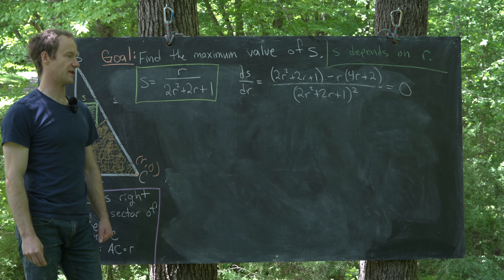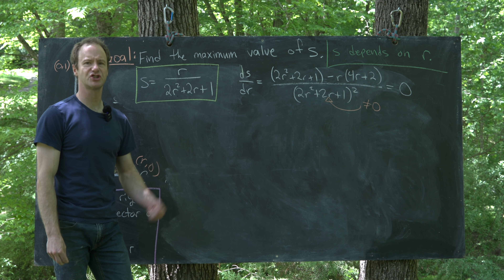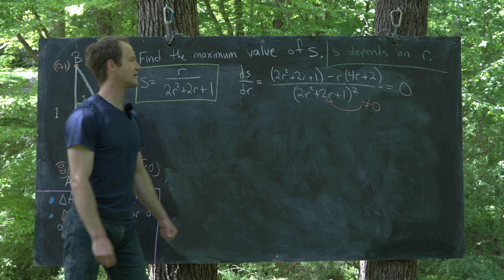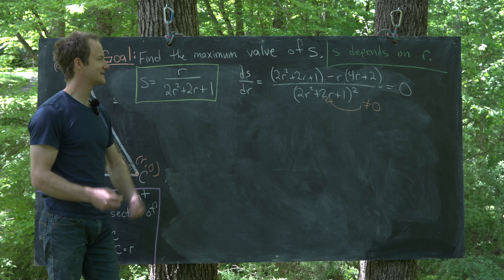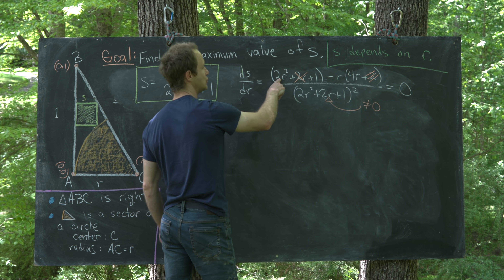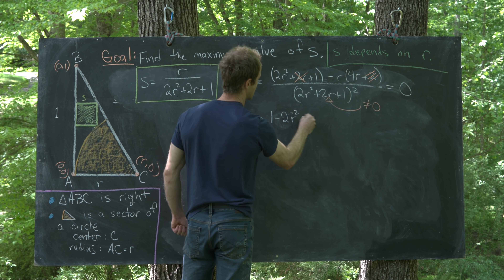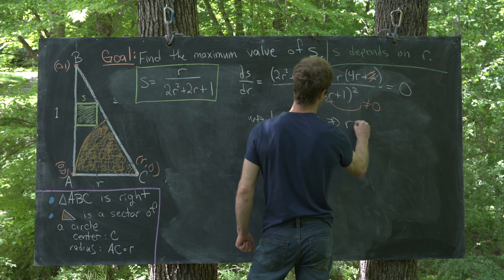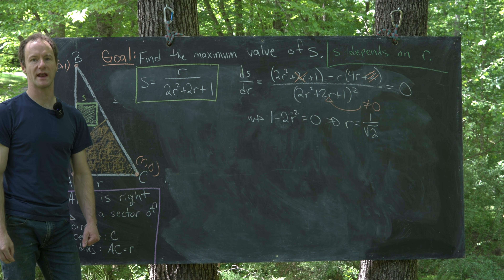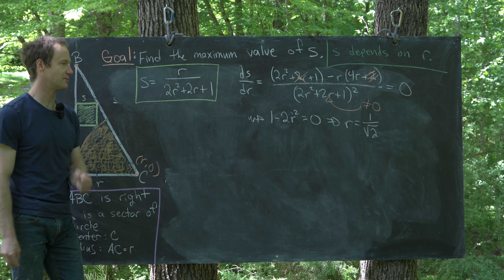Setting ds/dr = 0, we only need the numerator equal to zero since the denominator is never zero (the quadratic has no real roots). In the numerator, the 2r and −2r cancel, and 2r² − 4r² simplifies, leaving 1 − 2r² = 0. Thus r = ±1/√2, and taking the positive root gives r = 1/√2.